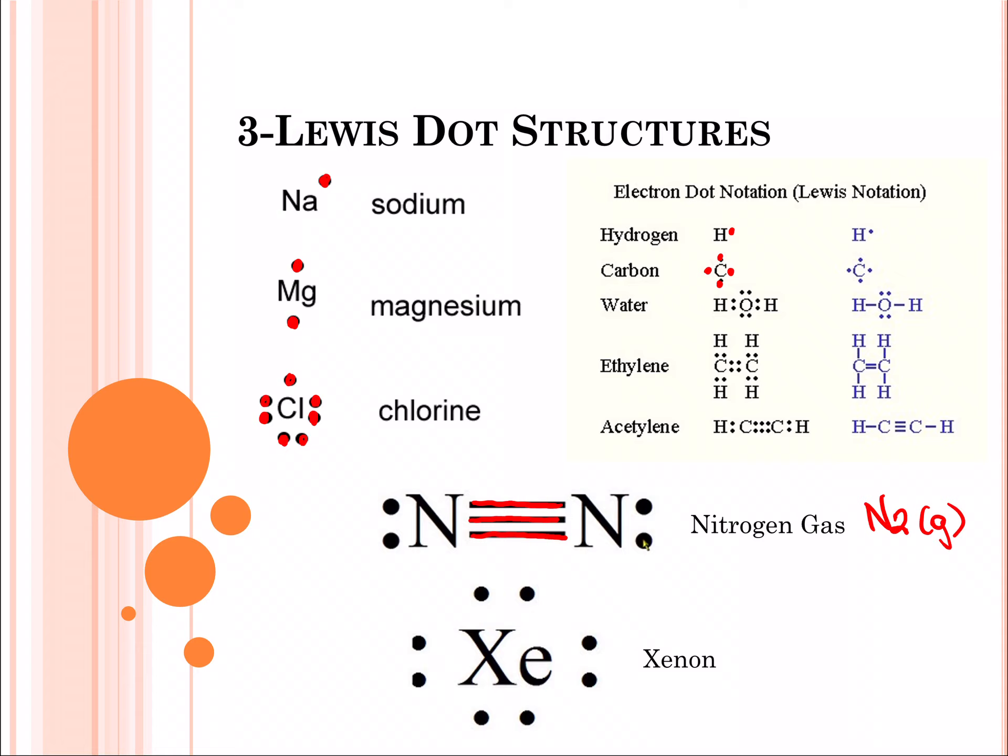Here we have a noble gas. Noble gases, their outer orbital is full. In the case of xenon, you'll see that it, unlike poor chlorine up there, has a nice full octet.